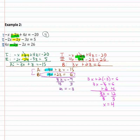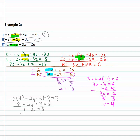We now have two of our solutions, so we go back to the original equations to find y. Using equation two since it has smaller numbers: negative two x — which is four — minus two y minus three z — which is negative three — equals five. That gives negative eight minus two y plus nine equals five. Combining like terms: one minus two y equals five. Subtracting one from both sides gives negative two y equals four, and dividing by negative two, y equals negative two. Our final solution is x equals four, y equals negative two, z equals negative three.